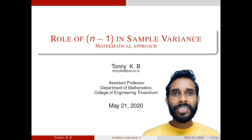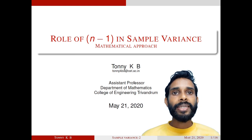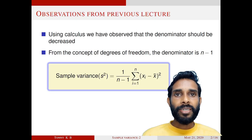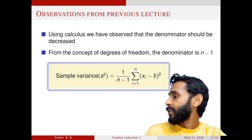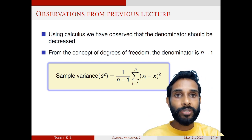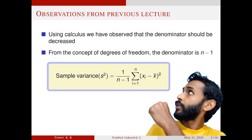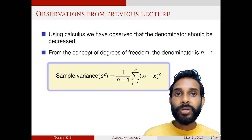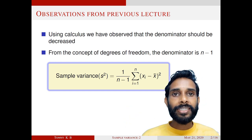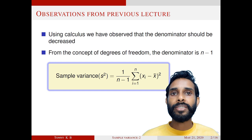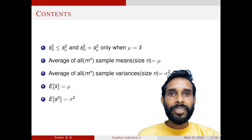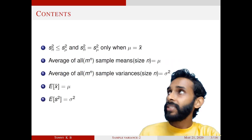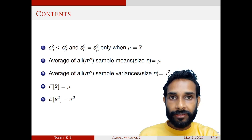Namaskaram. Welcome back to the second lecture on sample variance. Our first lecture was the intuitive approach and this one is mathematical. In the previous lecture, we defined sample variance s² as 1/(n-1) · Σ(xi - x̄)² because of two good reasons. In this lecture, I am trying to establish that this is a good estimate of σ², that is, s² is an unbiased estimate of σ². I will settle all the promises made in the previous lecture.